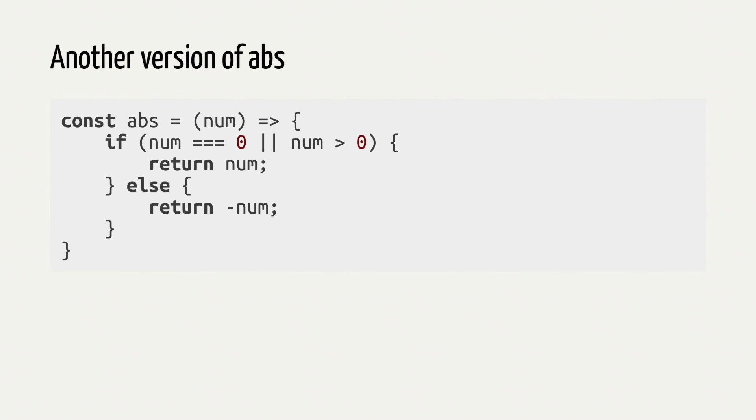In programming, there are usually multiple ways to do the same thing. We can rewrite our absolute value function differently and get the same result. Let's try and do it using these new ideas. So now we have only two conditions. First, if number is zero or number is greater than zero, then return the number. Second, in any other case, return minus number.